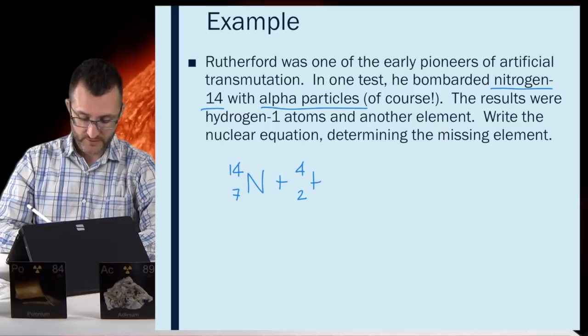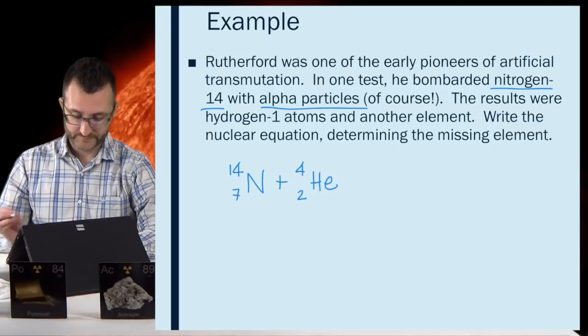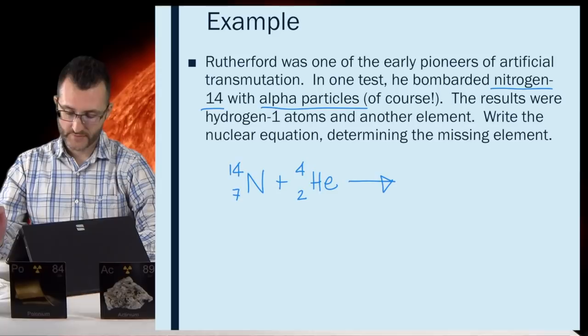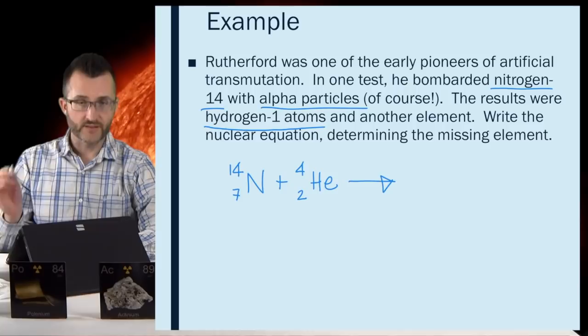Okay. And we know at least one of the products from the reading. Which one do you think that is? It says the results were hydrogen-1 atoms and another element. So, I know the hydrogen-1. Okay. Alright, so I'll get that done as a product. Hydrogen, mass of one, also atomic number one. Okay, so now we just have to figure out what the missing element is.